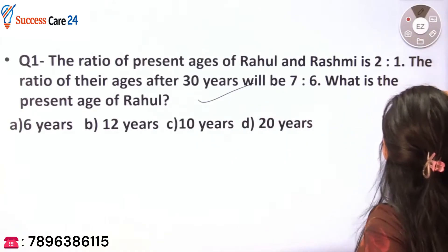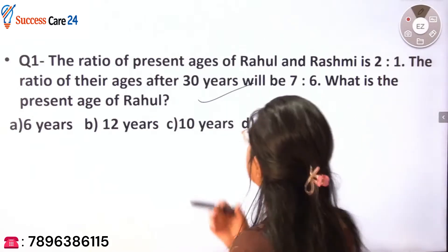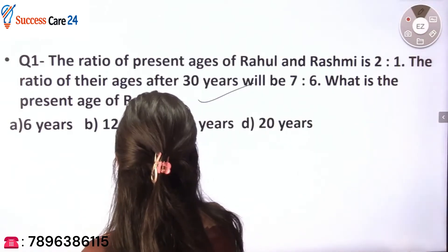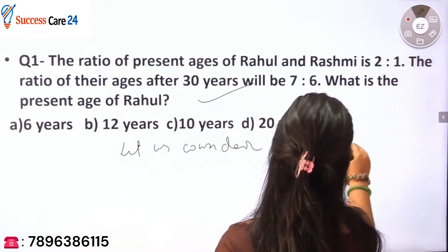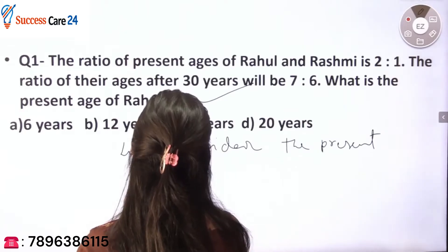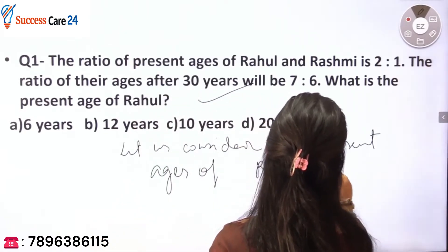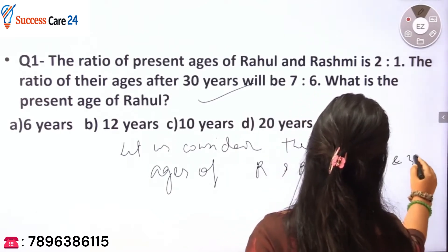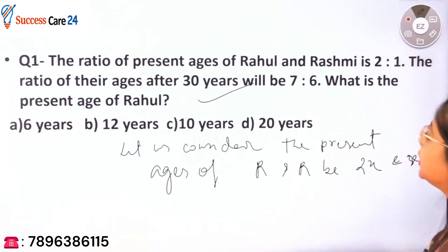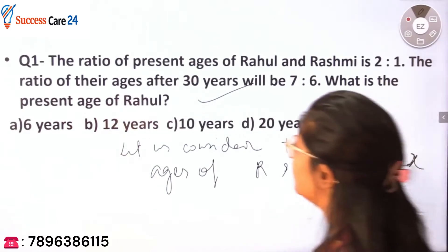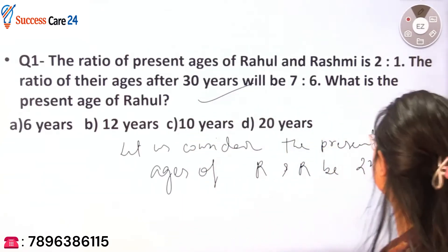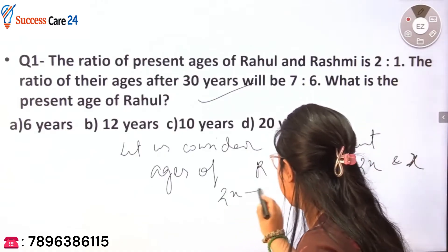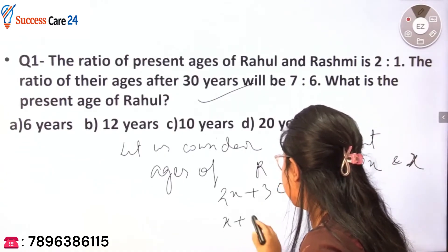First let me discuss the conventional method — how we used to do such questions. We let the present ages of Rahul and Rashmi be 2x and x, because the ratio is given as 2 is to 1. After 30 years, their ages will be 2x + 30 and x + 30.